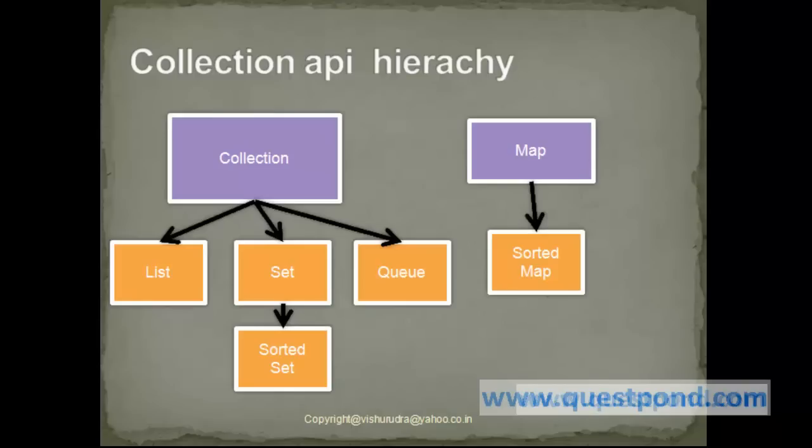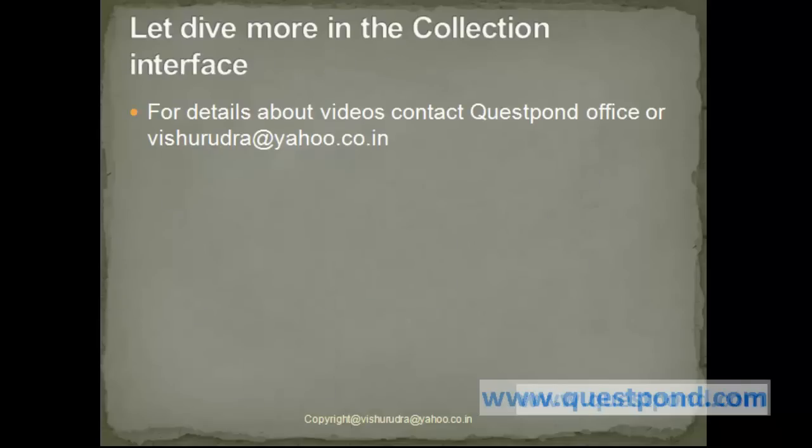Each of the collections — List, Set, and Queue — have unique properties. For example, List is an ordered collection, Set will allow no duplicates, and so on. Let's dive more into the Collection interface in the next program.